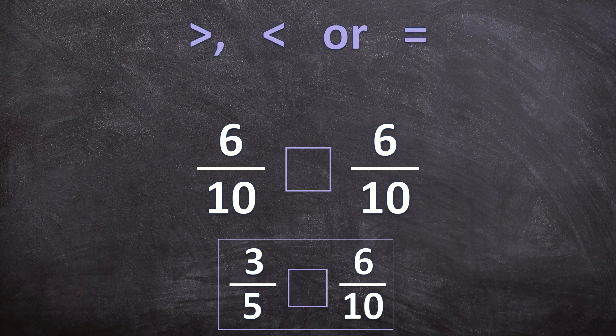We also need to multiply the numerator by 2, so 3 times 2 is 6. Now that our denominators are the same we can go ahead and compare these two fractions. And as you can see, these two fractions are equal — 3 over 5 is equal to 6 over 10. They are equivalent fractions.